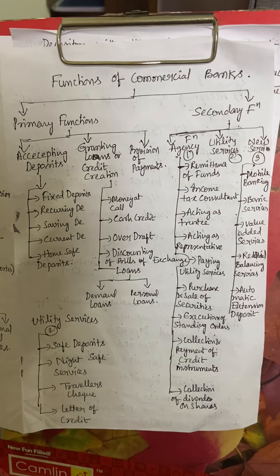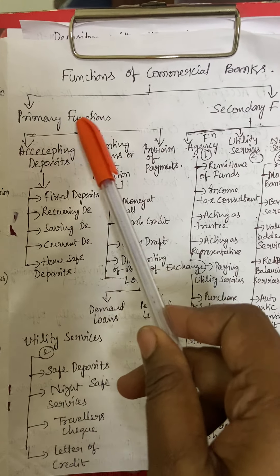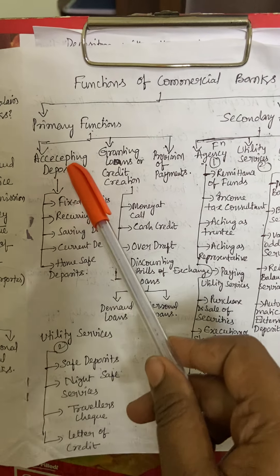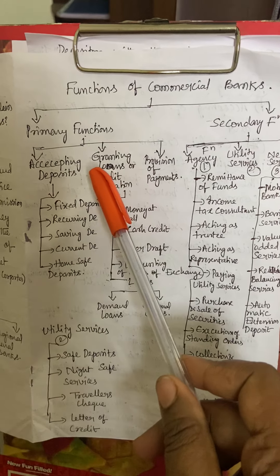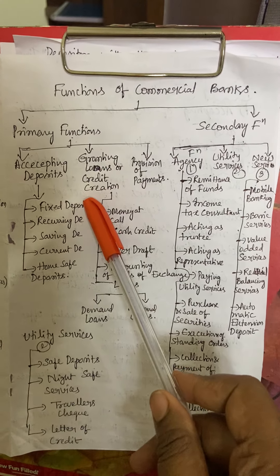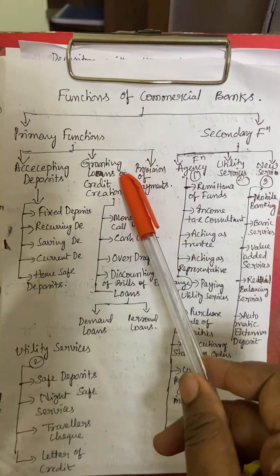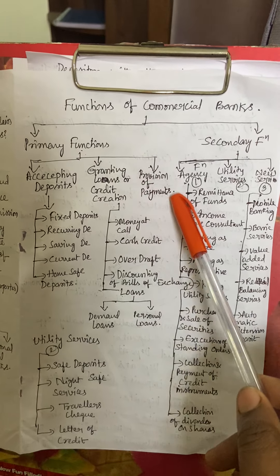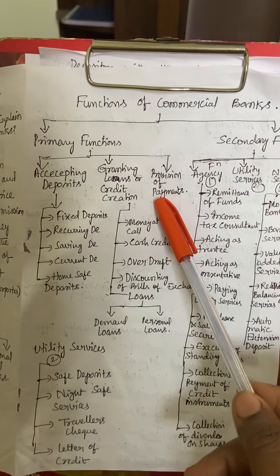Now we will see what are the primary functions and secondary functions of commercial banks. When we are talking about primary functions, three categories are there: accepting deposits is the first and foremost important function, second is granting loans or credit creation, and third is provision of payments — how to make payments, what provisions are there, how to repay that money, decided by individual banks according to RBI.